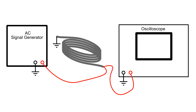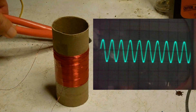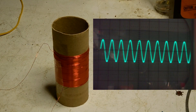When I add a metal core to that coil, this will increase the effect of the magnetic fields being produced. And you will see the signal increase, which means that the impedance of that coil is higher, or the AC resistance of that coil is higher.